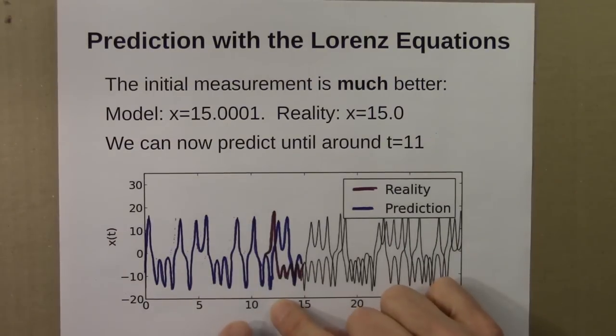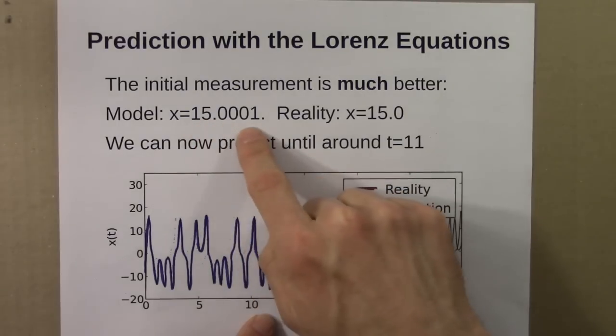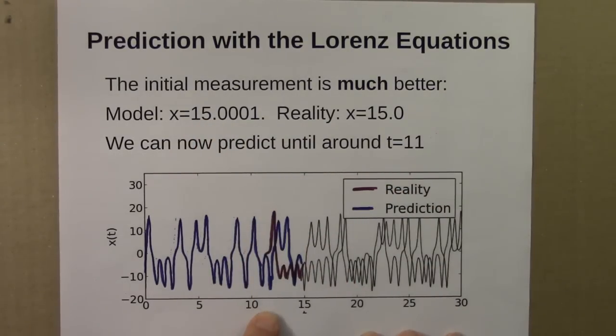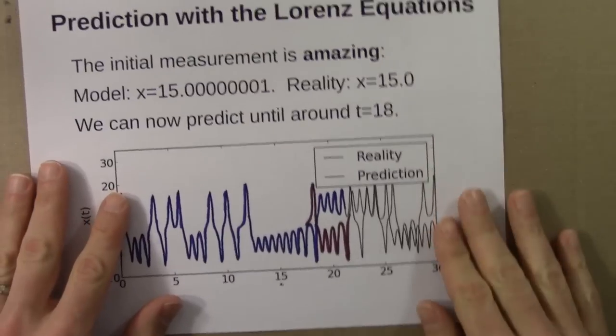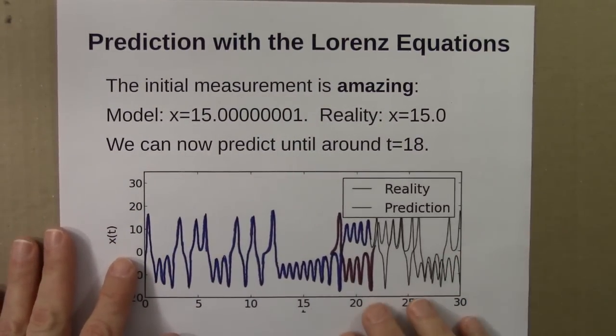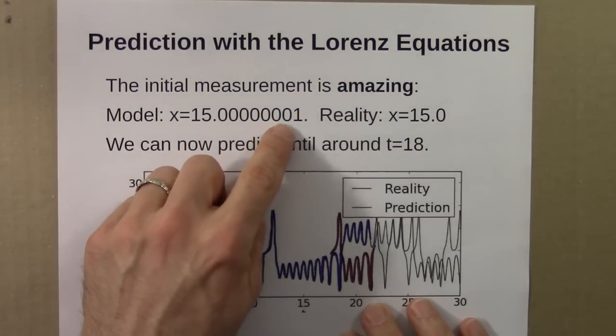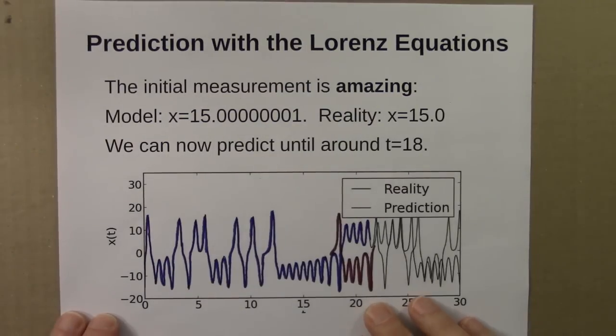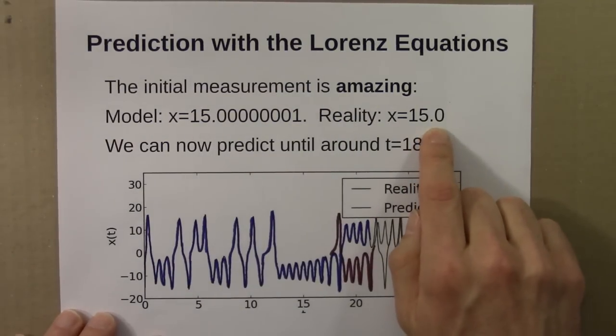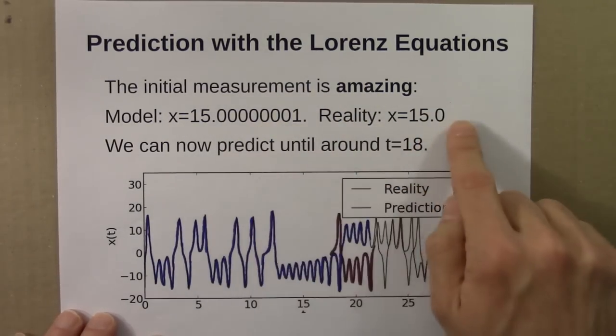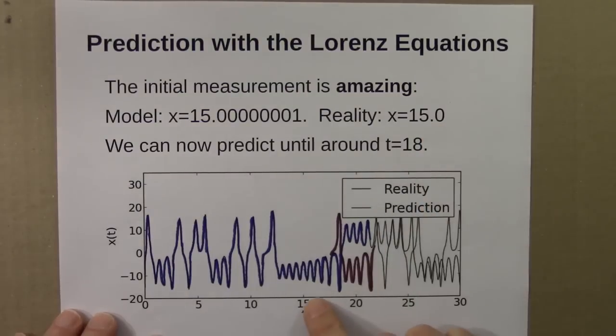Let's try a really, really good measurement. Suppose that we use 15.0000001, when in reality it's 15.0. This is amazingly close to the true value. Sure enough, reality and prediction, blue is still prediction, red is still reality, march together right along for farther now. We can go until almost 18.